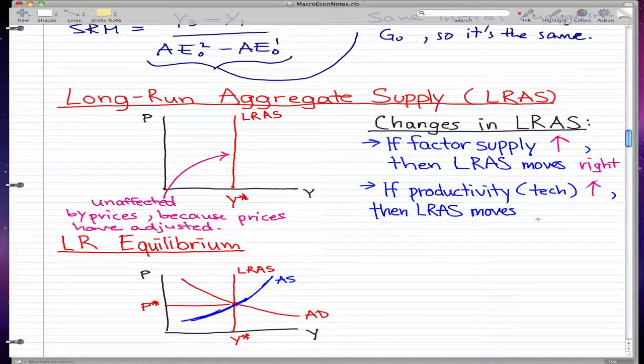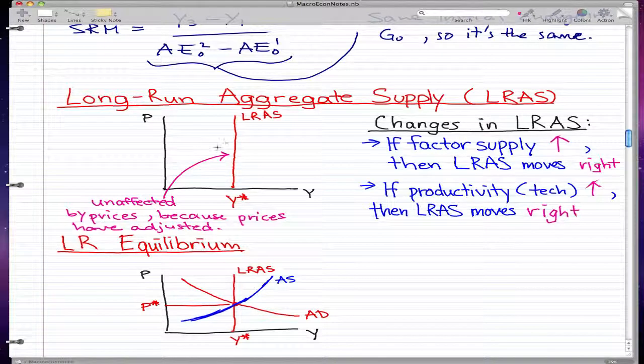So if any of these two things happen, or the opposite of these two happens, then the LRAS will move left or right depending on what changes occurred.